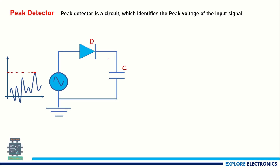Let us understand the behavior of the circuit. As we start applying the input and it increases, this diode becomes forward biased. As we know, the anode of the diode will be at higher potential compared to the cathode, so the diode conducts. As the input increases, the diode anode voltage increases, causing current to flow to the next circuit.